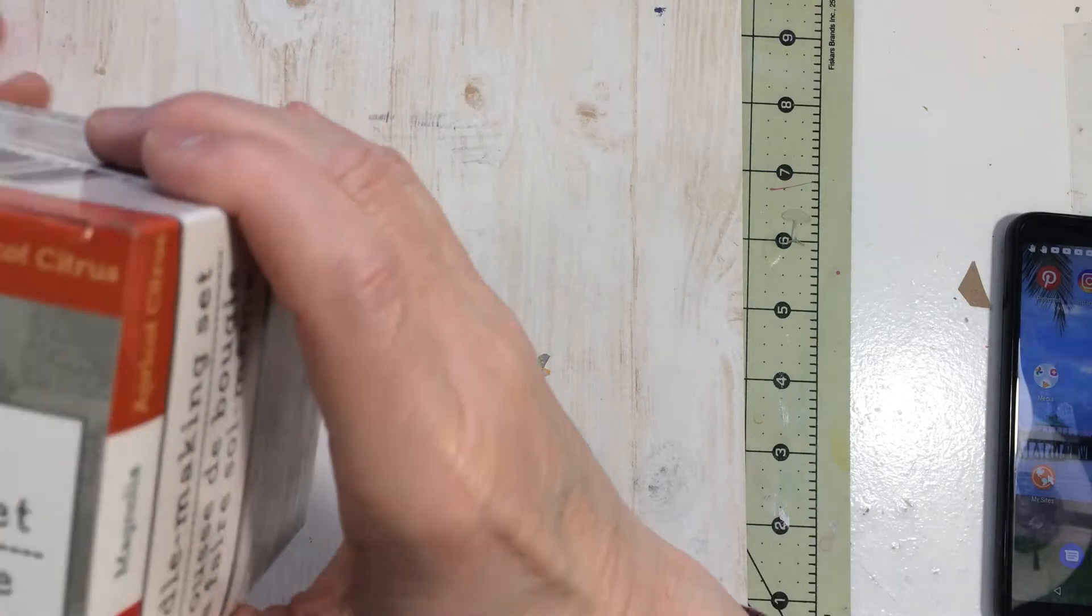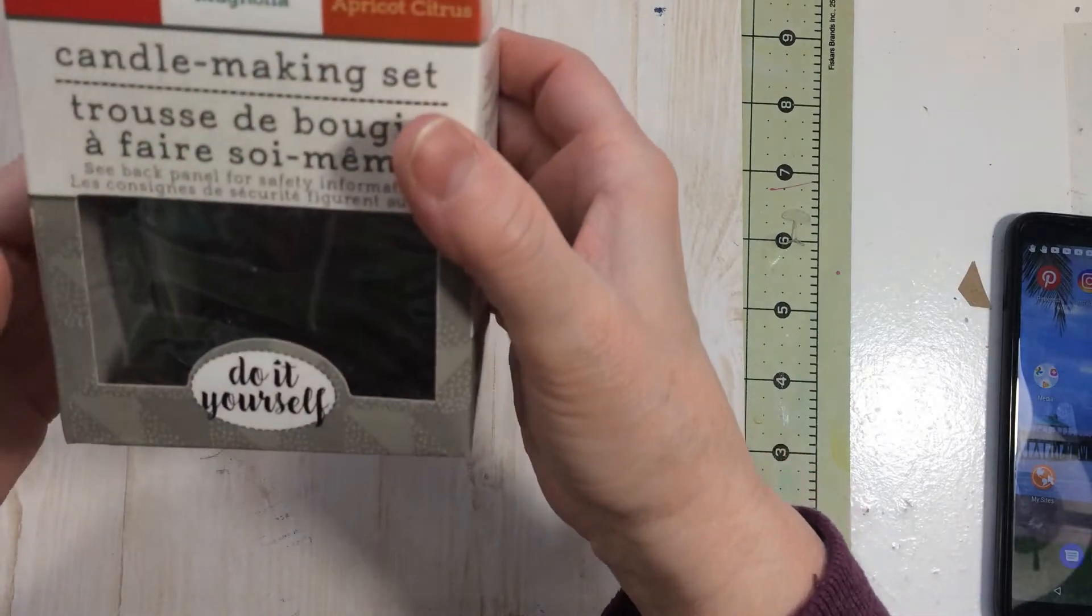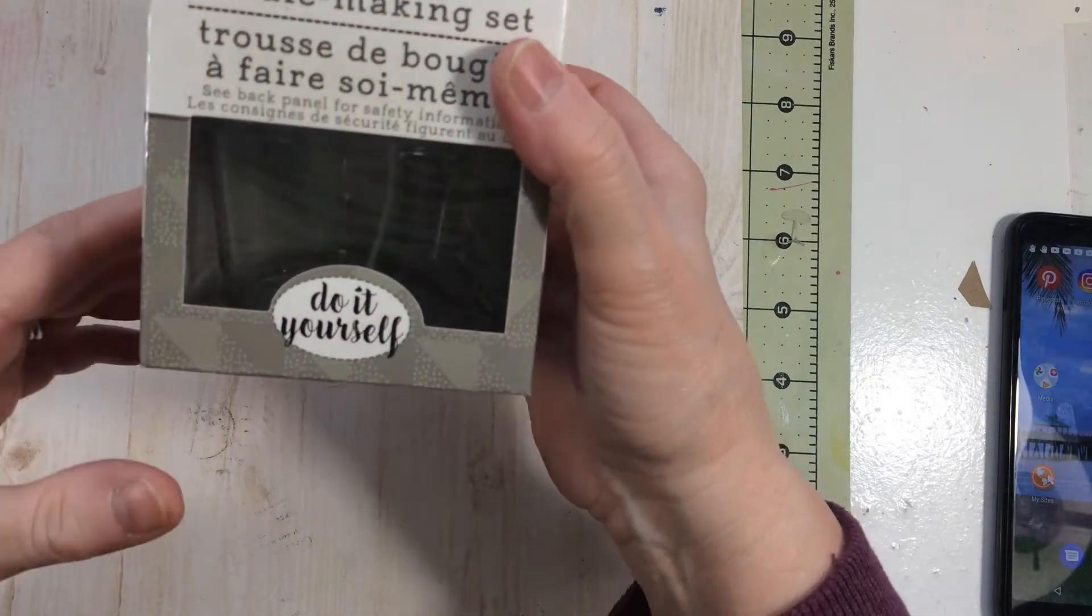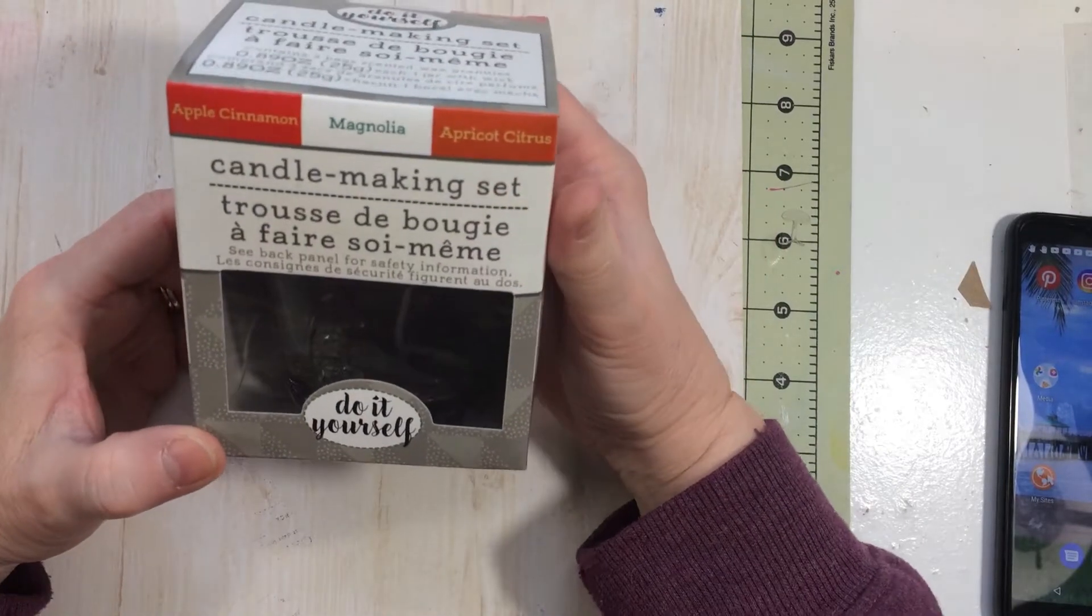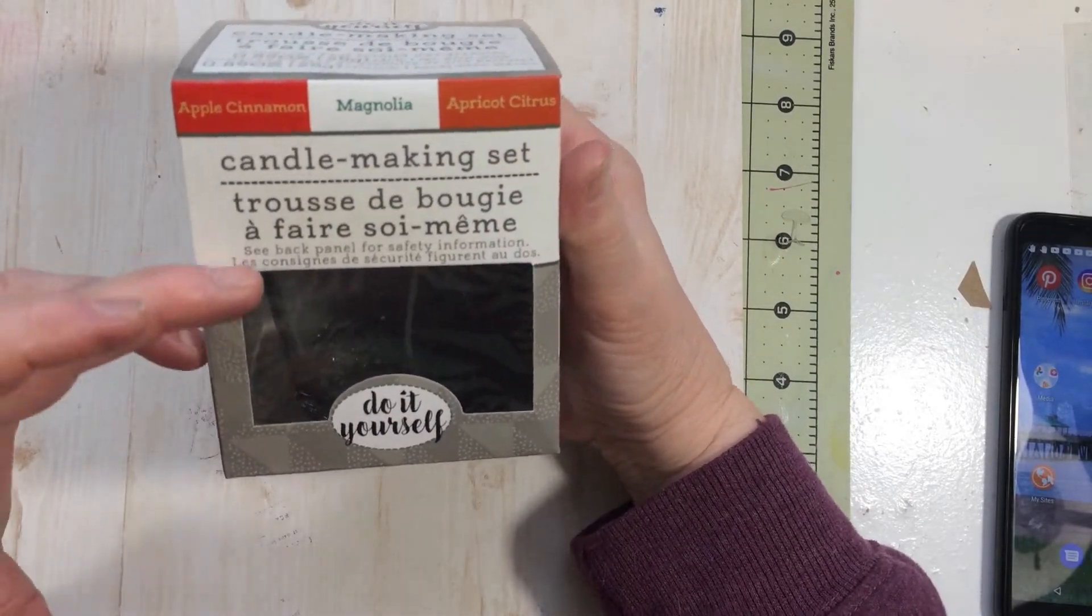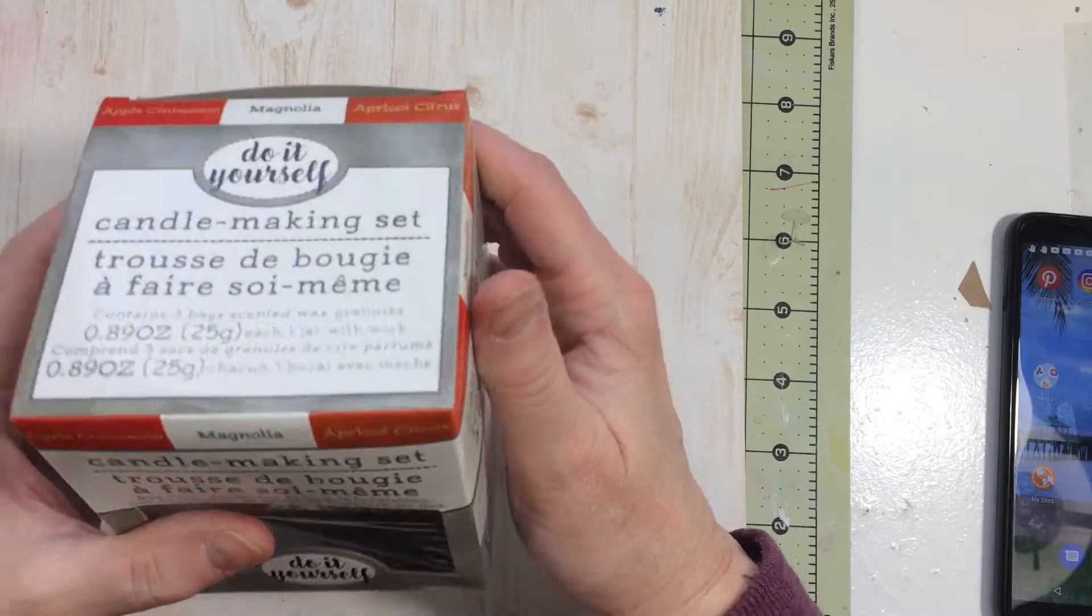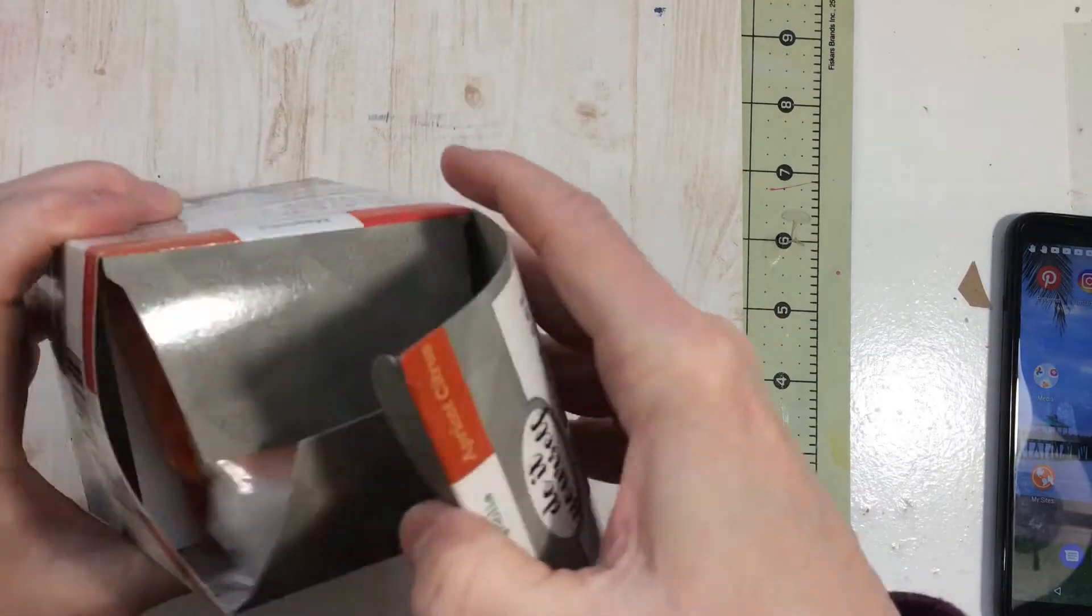I'm going to get started and I wanted to show what I found at the Dollar Tree. This is a candle making set and I thought this was really cool. They had different smells and fragrances.